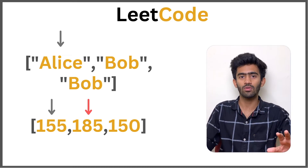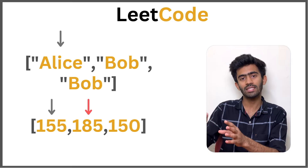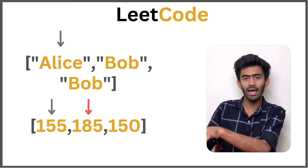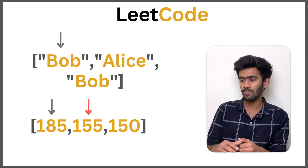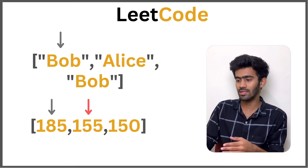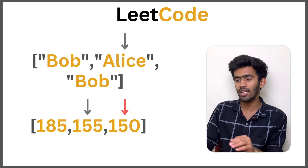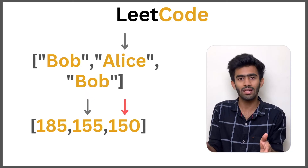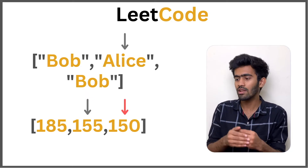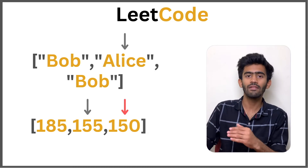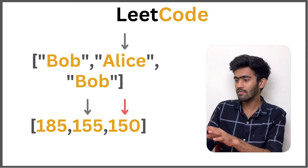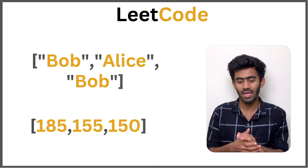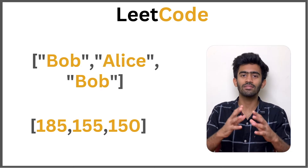So Bob and Alice get swapped, and 185 and 155 get swapped. Next, we move to the next pair of adjacent elements: 155 and 150. We check whether 155 is less than 150 — it is not, it is greater, so we do not swap. There are no more pairs, so we stop. Our final answer is Bob, Alice, Bob. It's a very simple question.